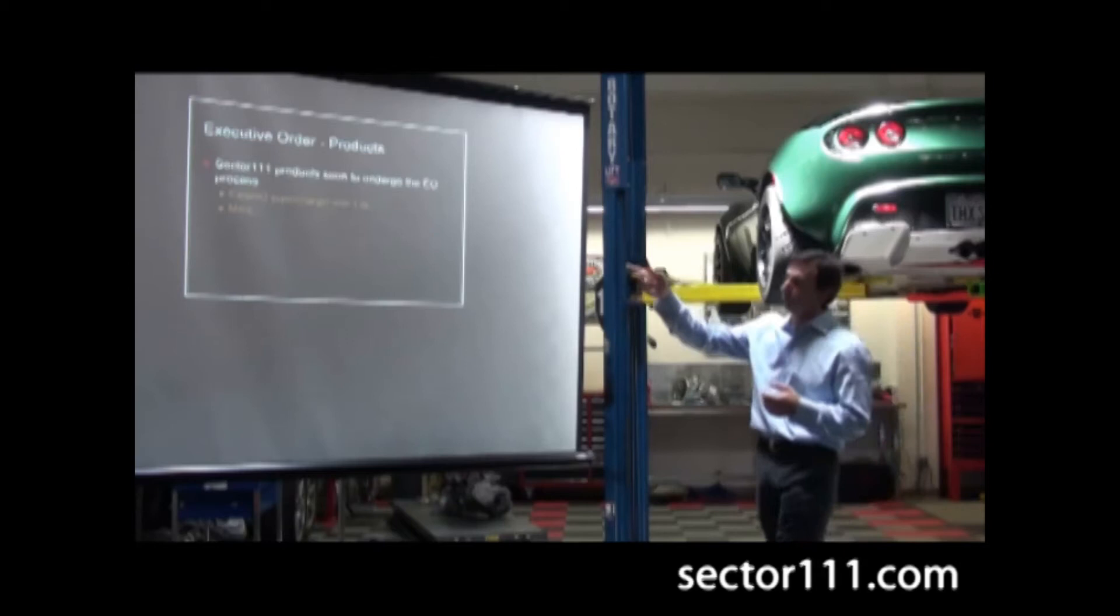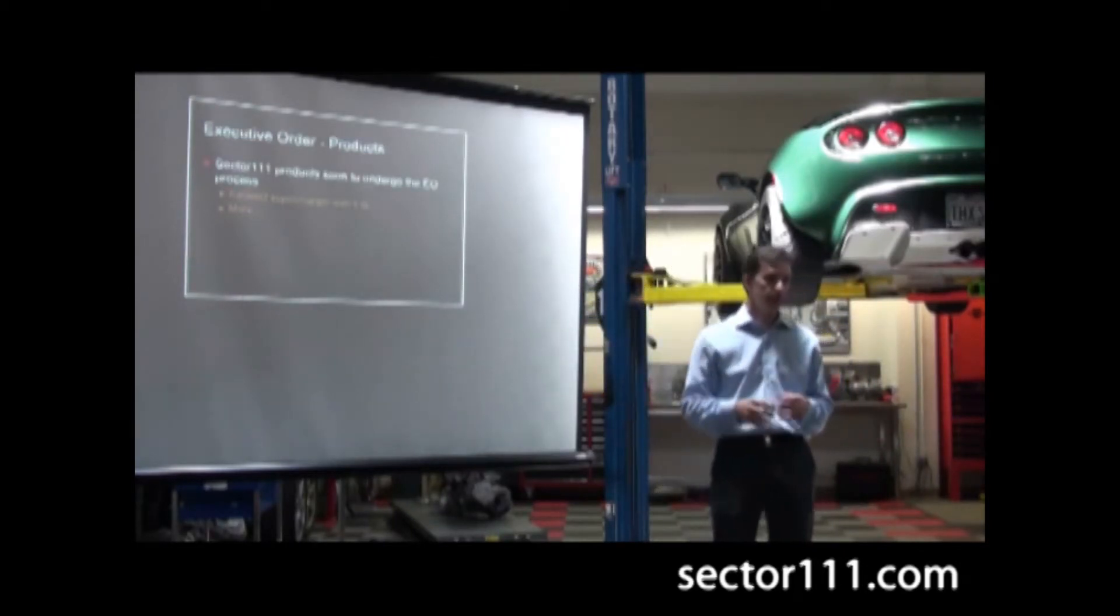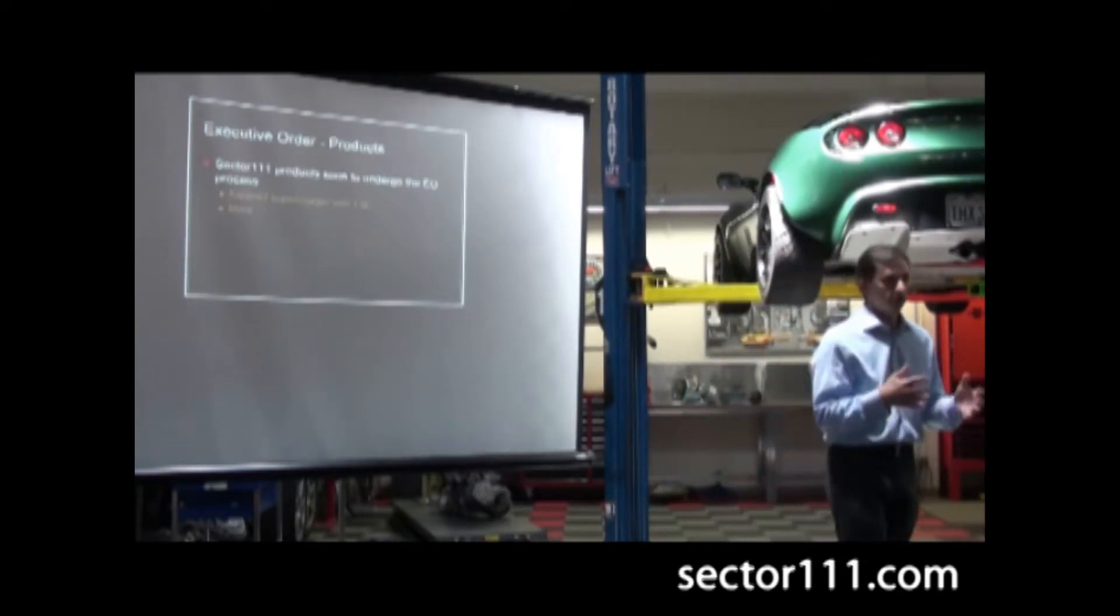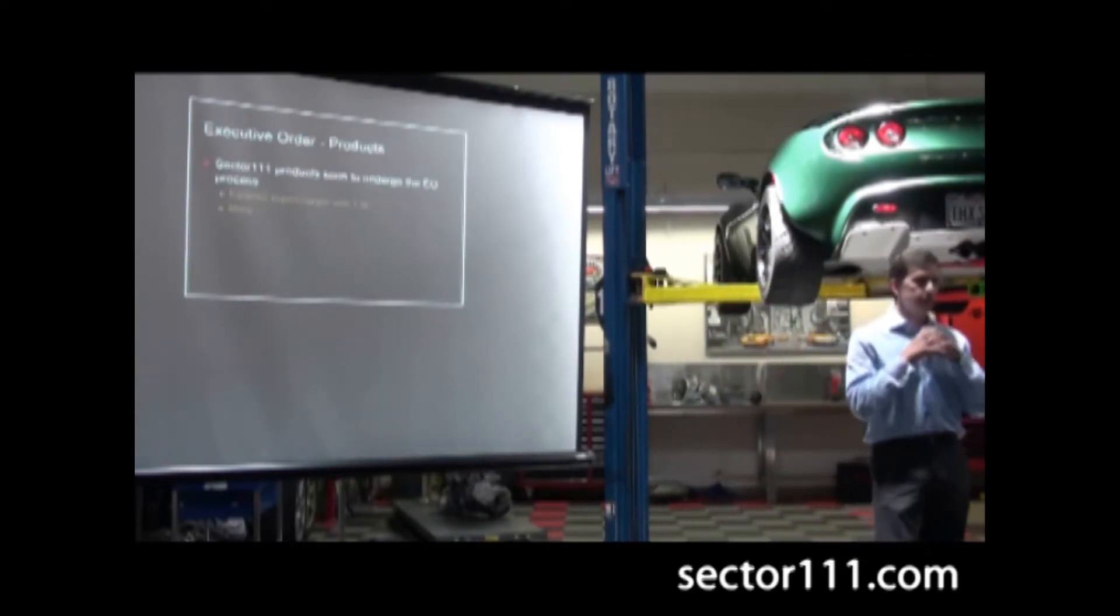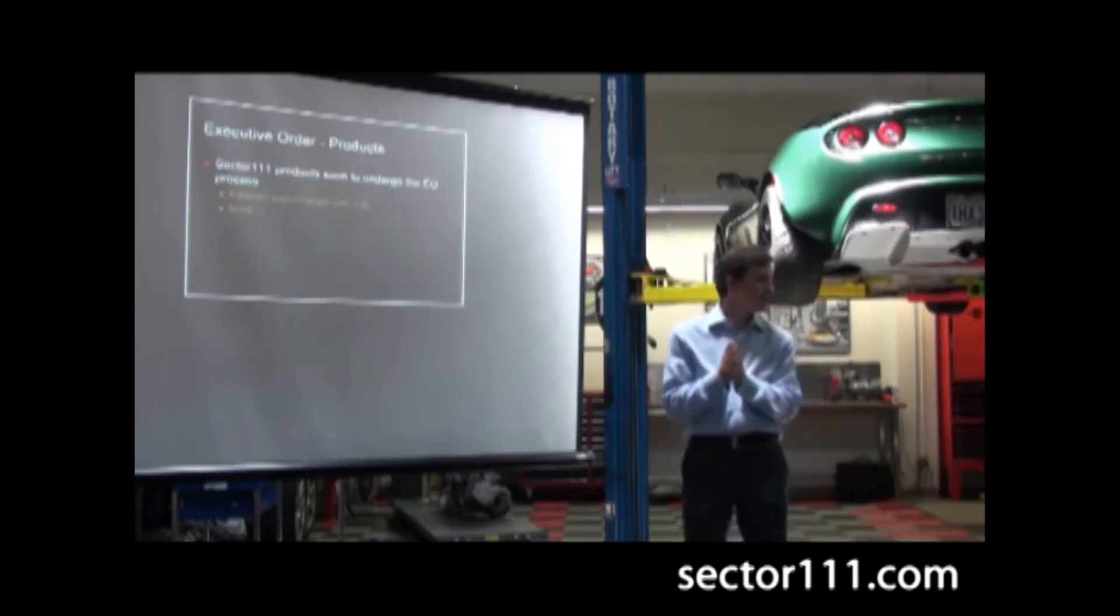So the current products that are going to be up next is this Katana 2, and we'll be taking that through the EO process very soon. We've already got the paperwork in, and we're waiting to go through the initial paperwork before we go past. But we're in process already. That will be coming.